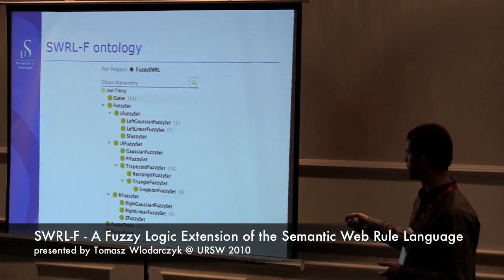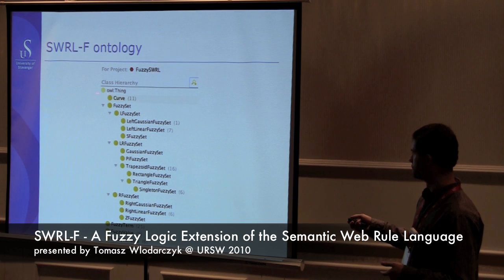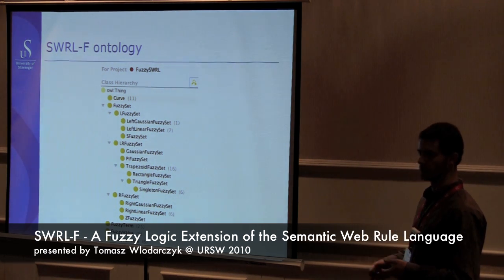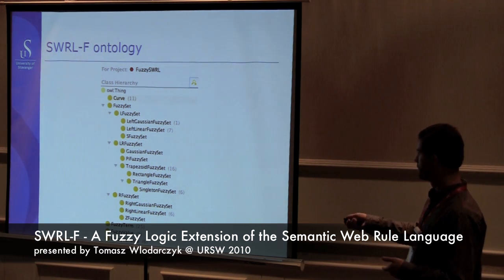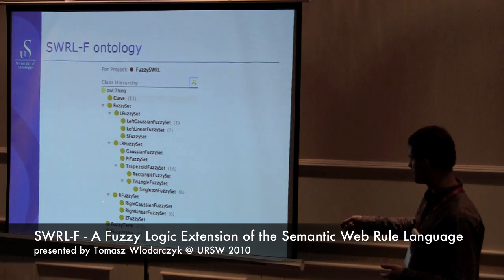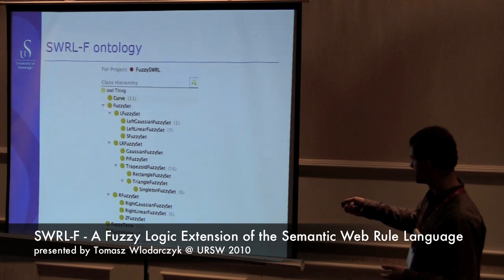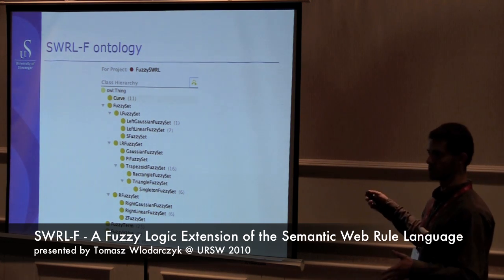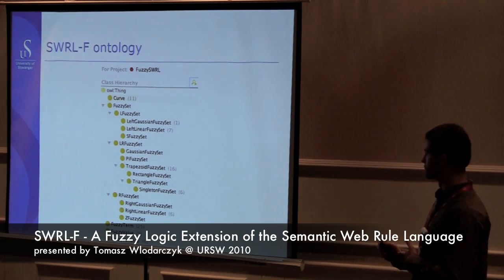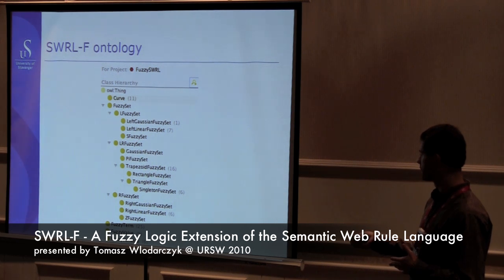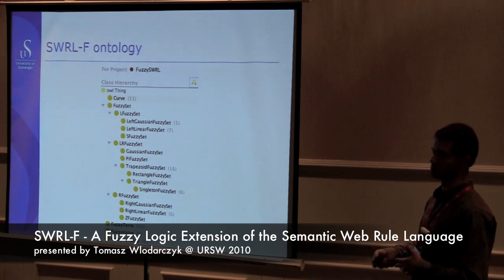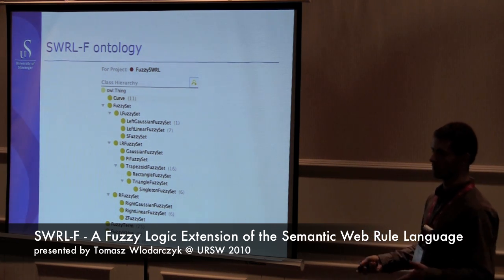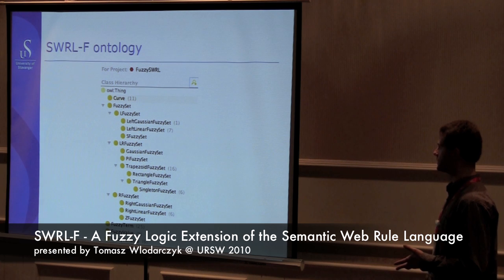So this is how the ontology looks like — you don't have to look at the curve, it just serves as a purpose to give an example. The actual ontology is this part: we have fuzzy sets so there are plenty of sets so you can express different types of data, and then we have fuzzy terms, values, and variables that are used to actually represent the fuzzy knowledge.